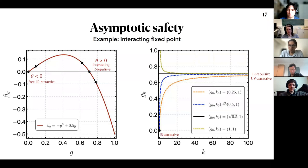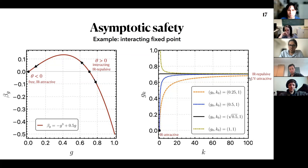Starting from a value slightly smaller than the fixed point value (√0.5), with a positive beta function the coupling decreases as you lower k — shown by the orange and blue lines flowing from the UV fixed point toward zero. Starting exactly on the fixed point, the coupling stays there for all k. But starting above the fixed point value, the coupling diverges as k → 0.